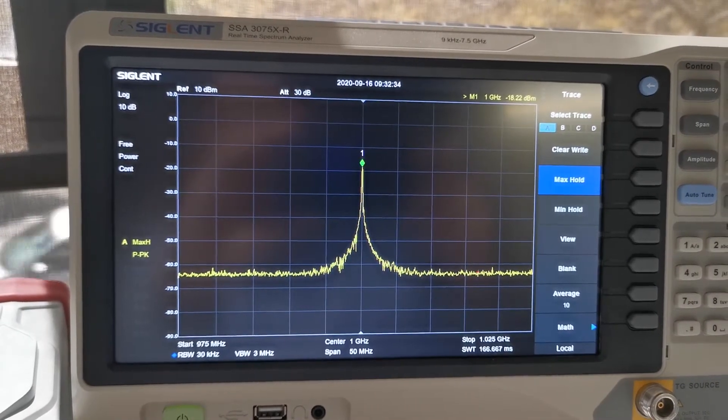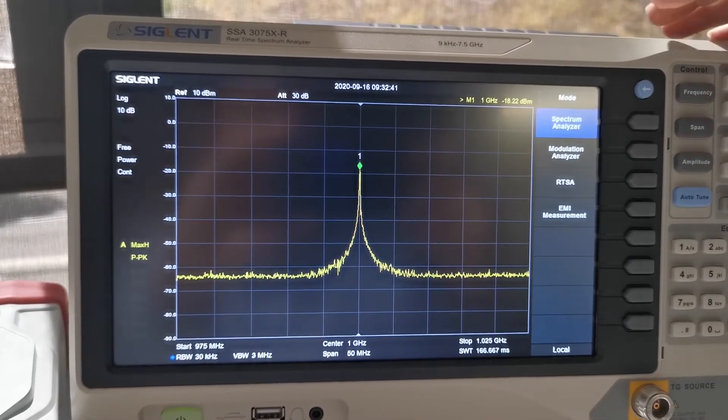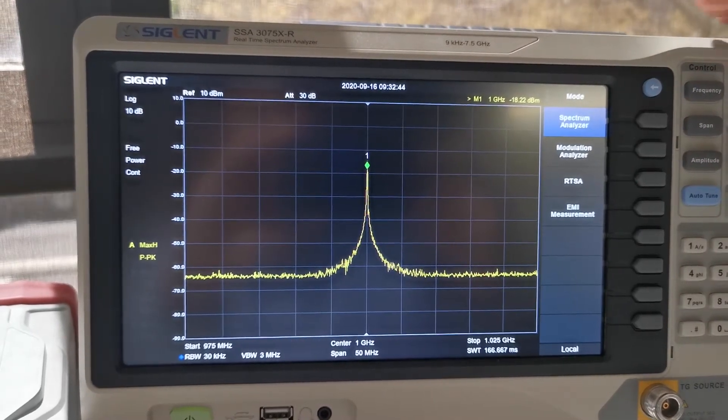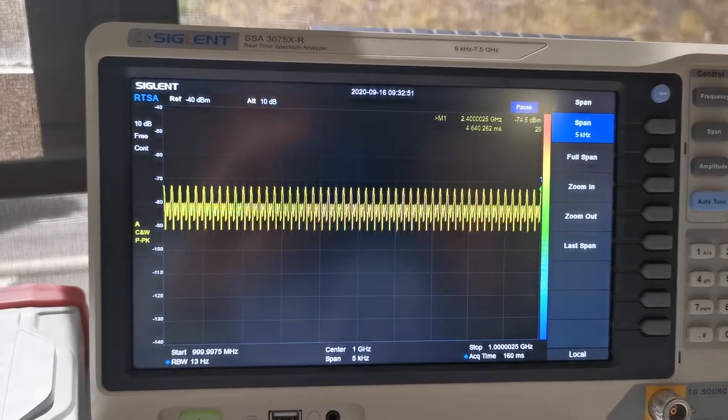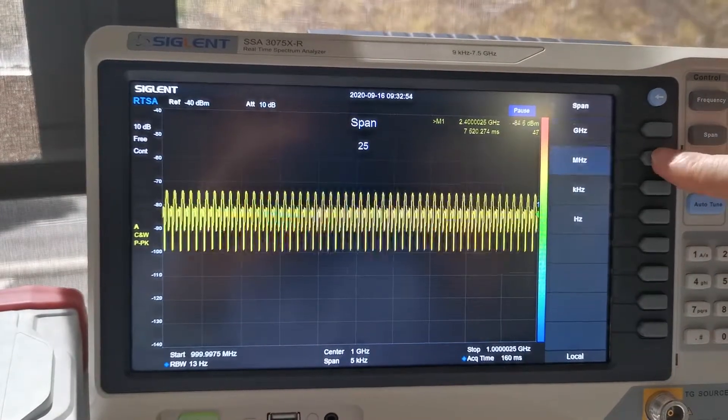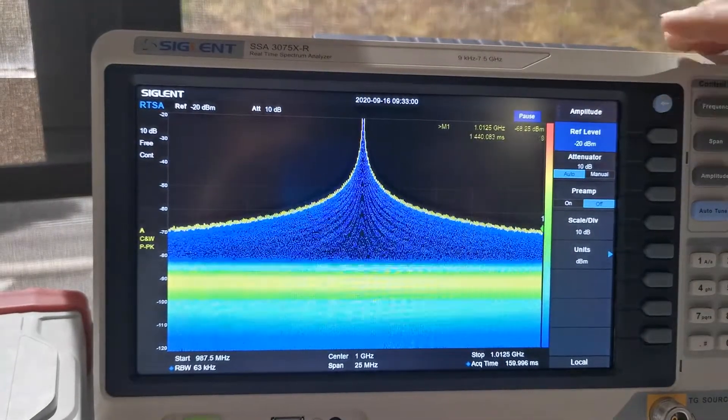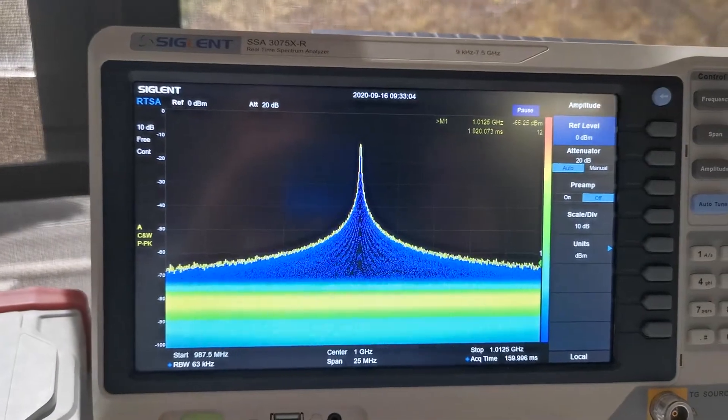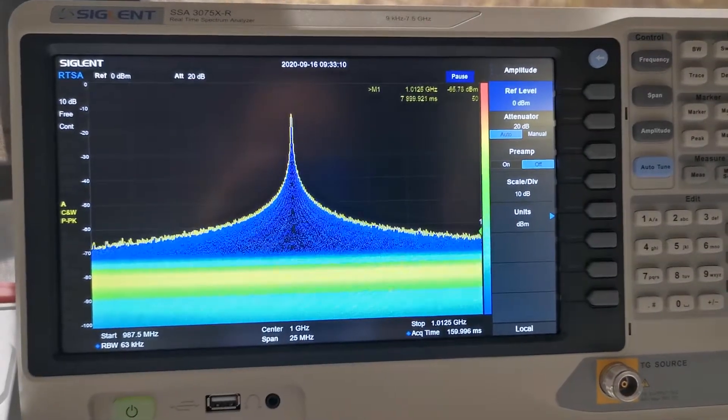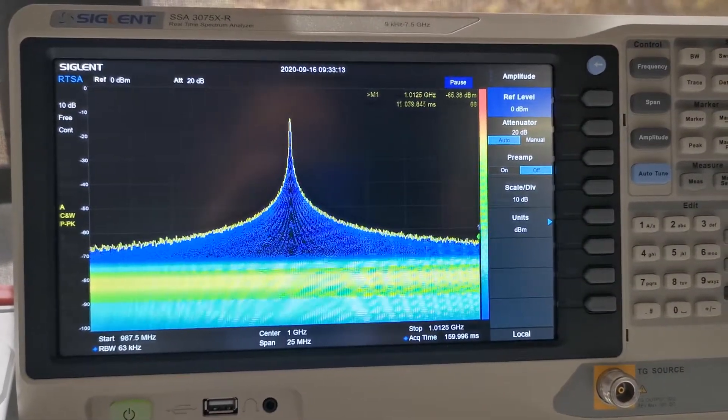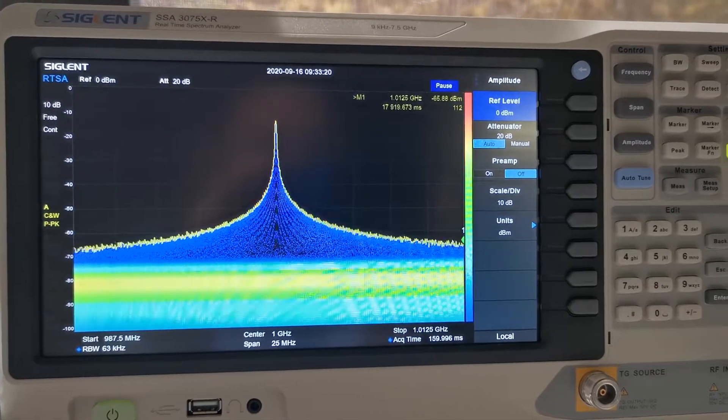Now we are going to switch this spectrum analyzer to real-time mode to see how the real-time spectrum analyzer can get the result very quickly. So we press the mode button and the RTSA. We can set the span to 25 MHz and the reference level to 0 dBm. Now we got the spectrum in a second. We don't need the max hold anymore. We don't need 20 seconds to accumulate the display anymore. So why the real-time spectrum analyzer can get the result so quickly? The trick is the real-time FFT by hardware.